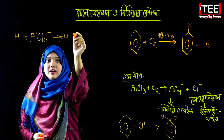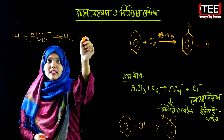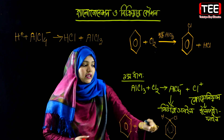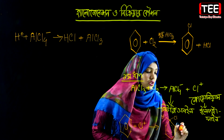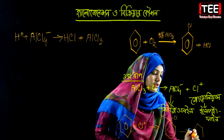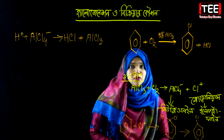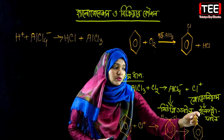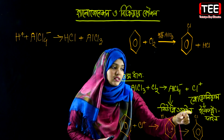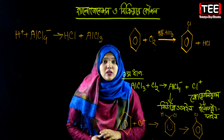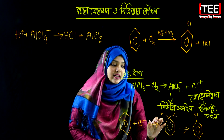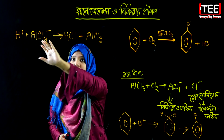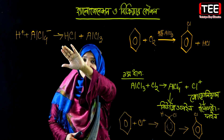As the reaction proceeds, hydrogen chloride (HCl) is released as a byproduct. When the hydrogen leaves the intermediate complex, a stable position is created on the ring, and aluminum chloride accepts the chlorine back from the released hydrogen chloride.